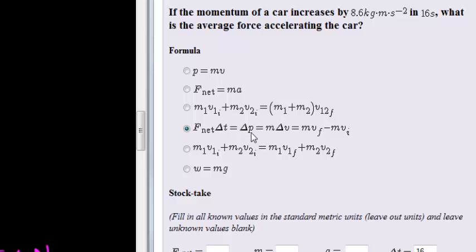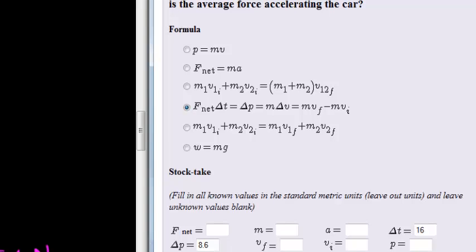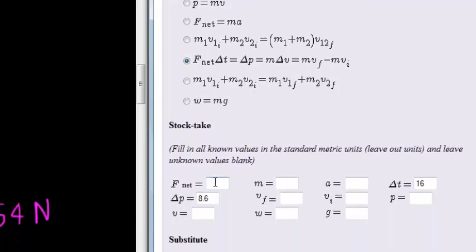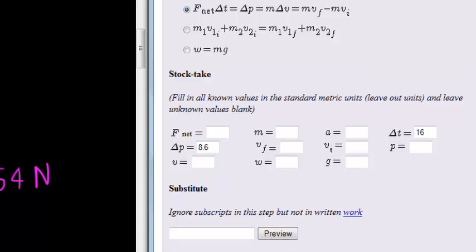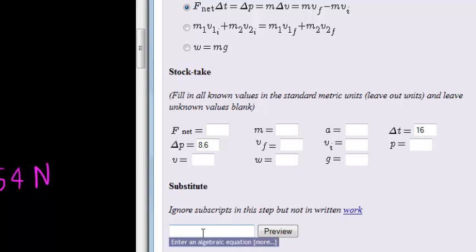We've already seen that this is the formula that we are going to use. In that formula, we want the net force. We have time, 16 seconds, and we have the change in momentum. So, when we substitute that, we're going to ignore subscripts, as always. So, force times 16 is equal to 8.6.